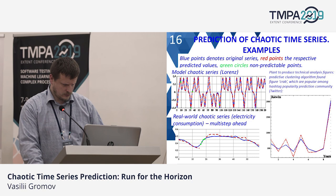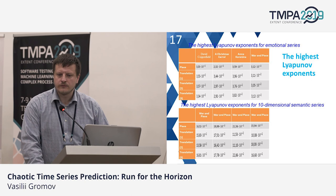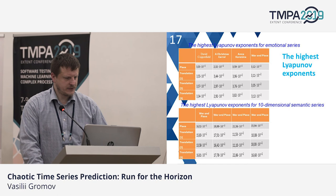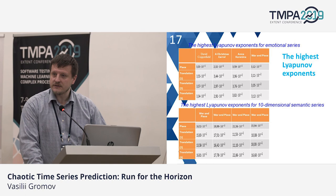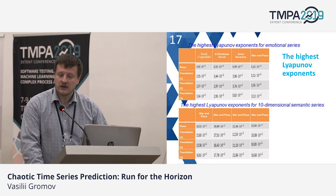Just one more slide. You see that David Copperfield, A Christmas Carol, Anna Karenina, and War and Peace all have positive Lyapunov exponents, which means they are chaotic time series. Moreover, we can compare these values for different translations of these literary pieces, and we are able to draw a conclusion about which translation is closer to the original masterpiece. Thank you for your attention.